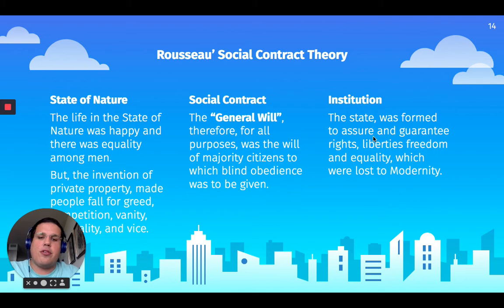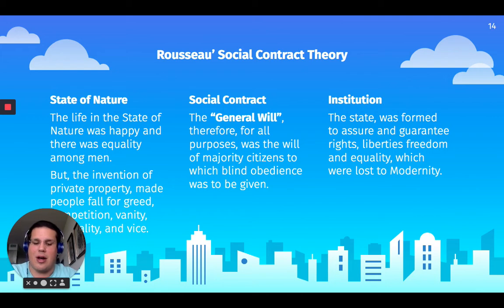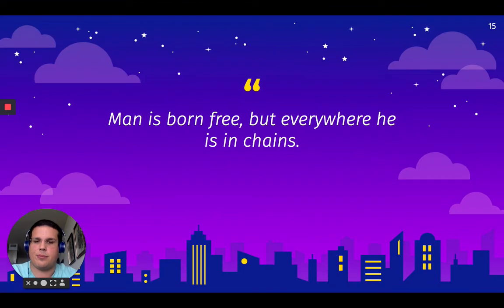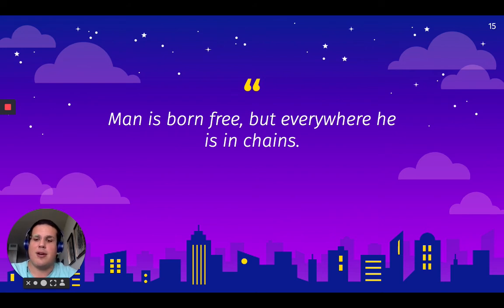The institution that Rousseau's social contract theory forms is going to be a state that guarantees rights, liberties, and freedom. It's mostly focused on the modern state, as we call it in AP Comparative Government. A quote from Rousseau is that "man is born free, but everywhere he is in chains." This means that within the social contract, people are going to have to lose some freedom in order to gain the freedom of being part of that social contract and the freedom to maintain their property and happiness as well.